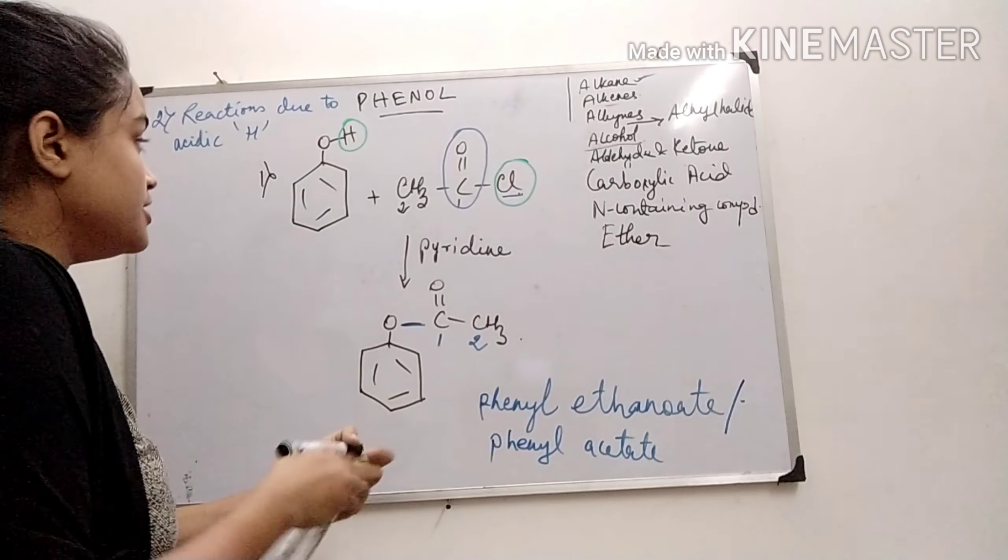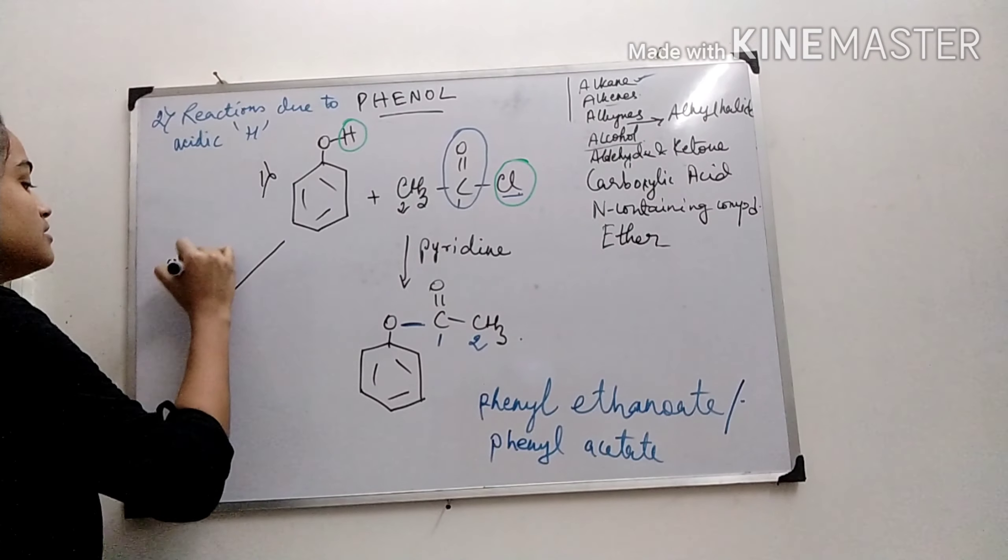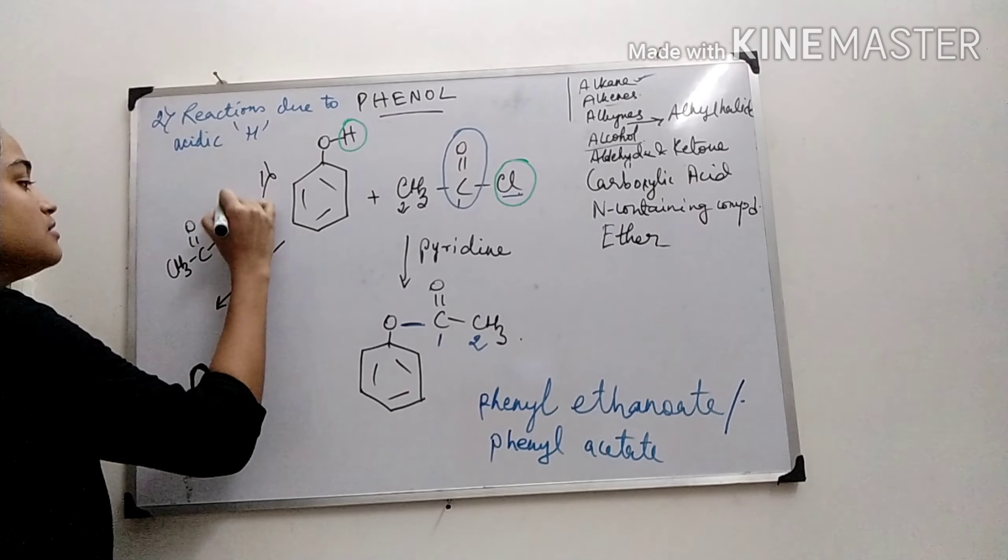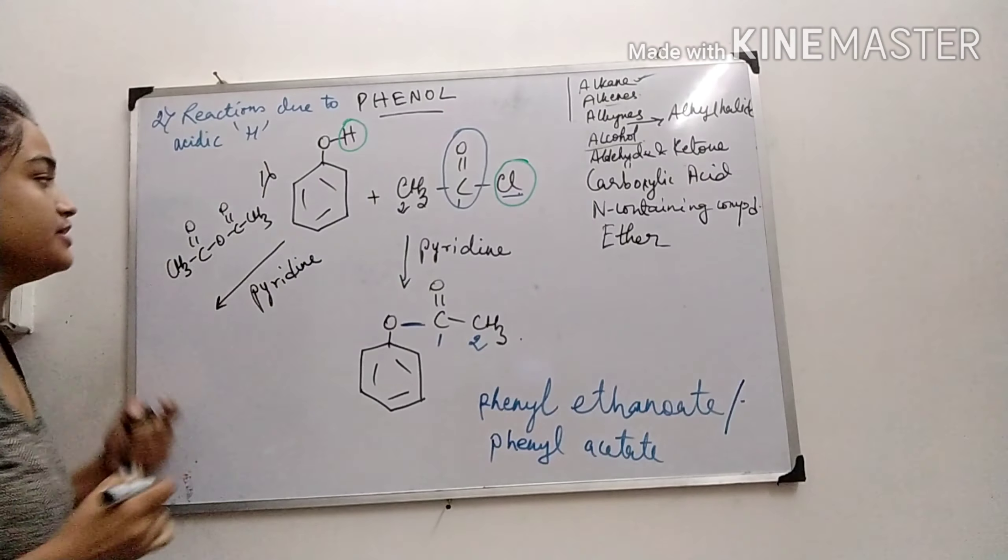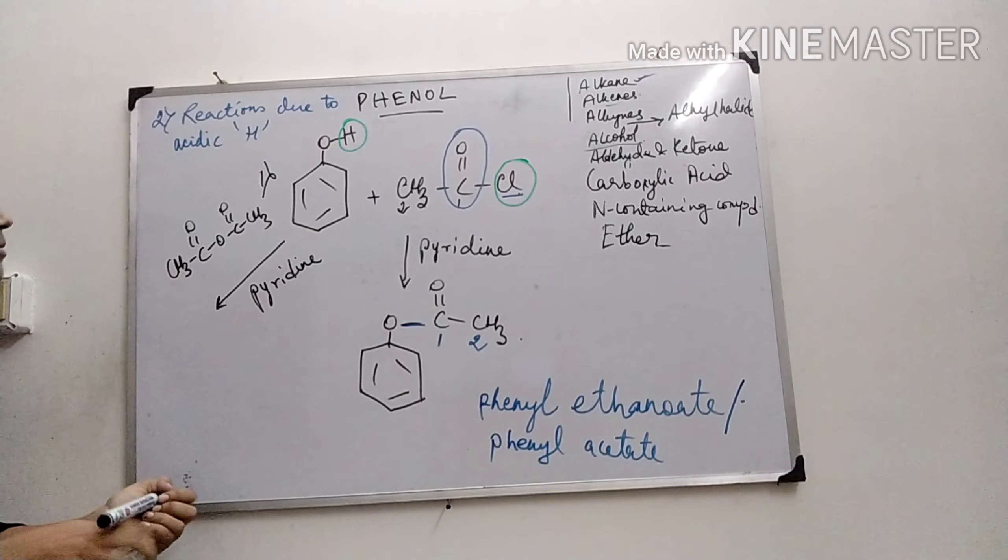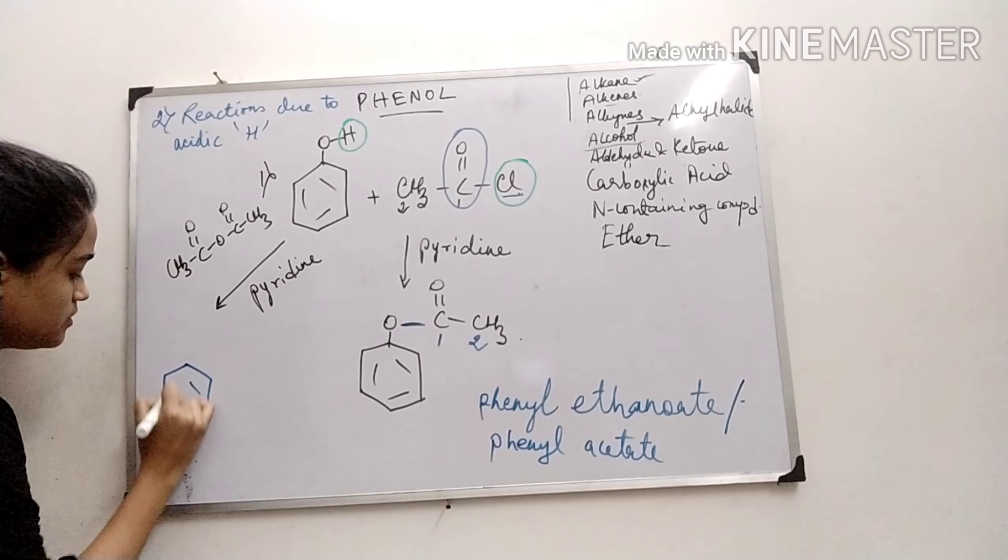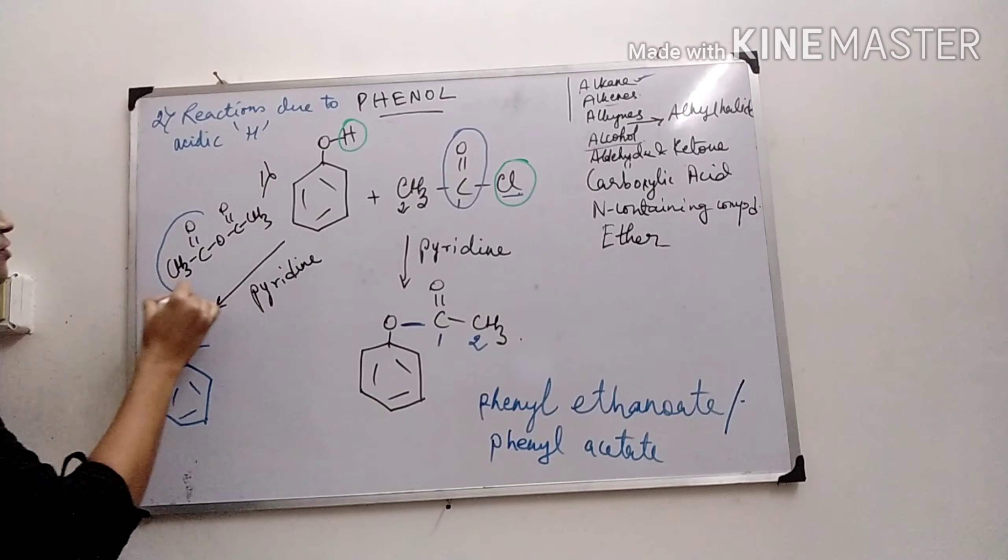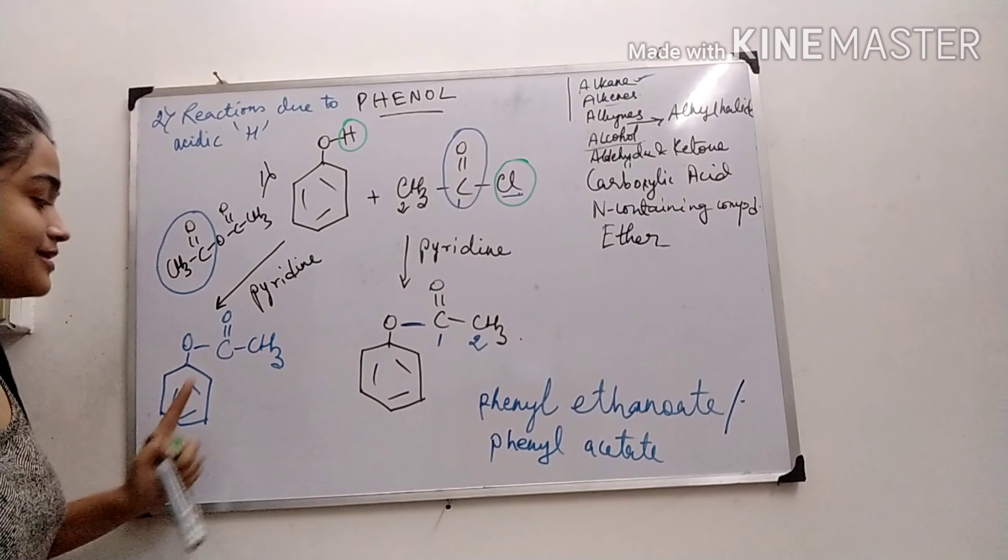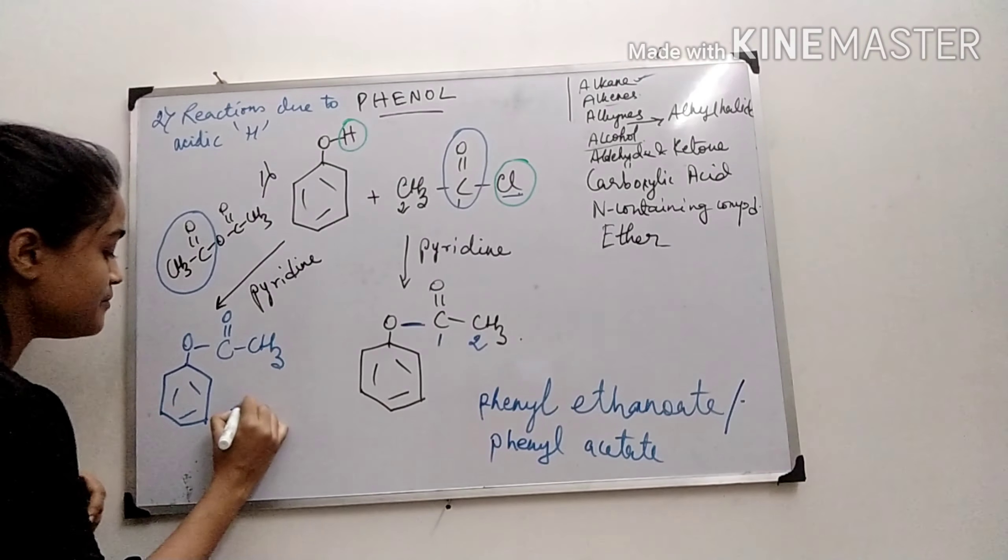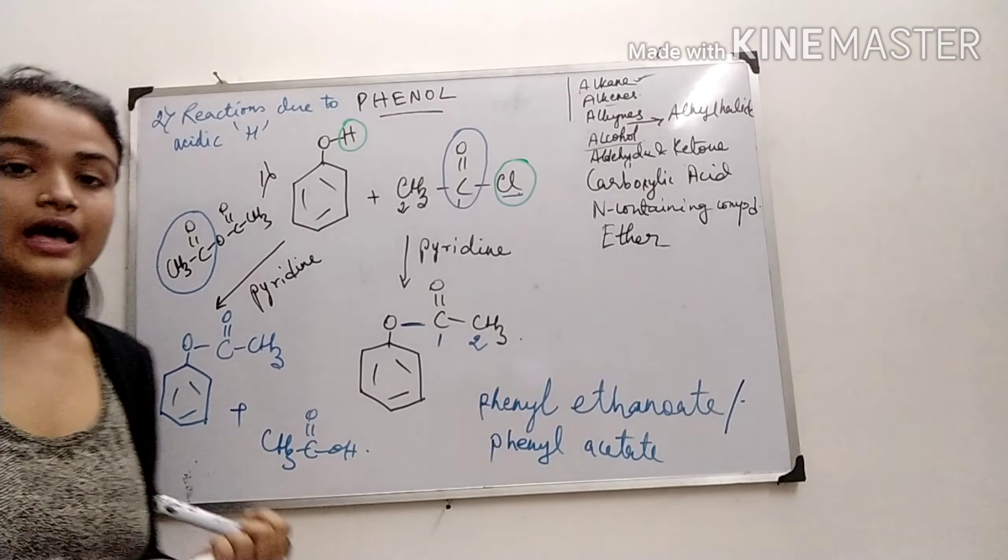This reaction can also be done by treating phenol with acetic anhydride in presence of pyridine. Again, only this portion will be attached with phenol, and we will get the same product, phenylethanoate. At the same time, acetic acid will be formed.